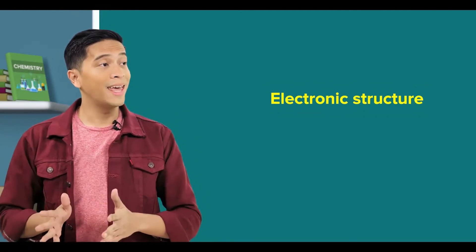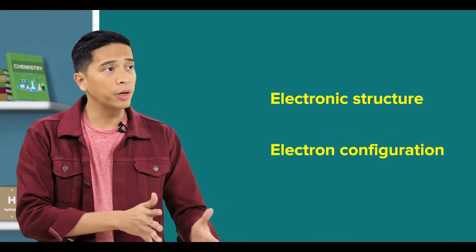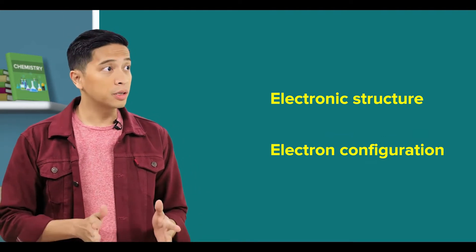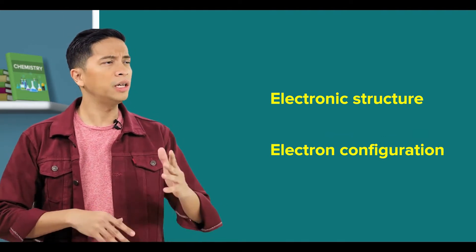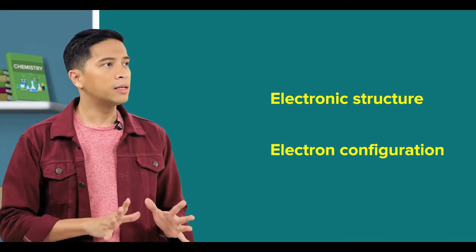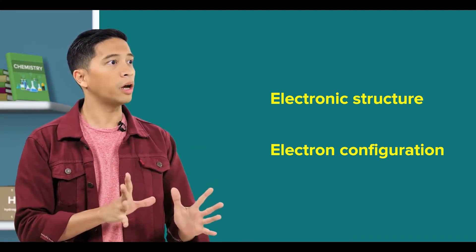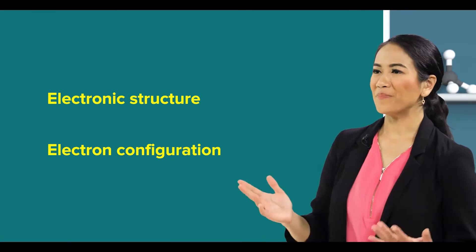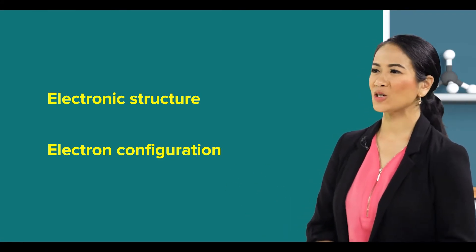And I am so confused between the terms electronic structure and electron configuration. Some authors seem to use them interchangeably, but then they look so different when they are used to describe the same atom. Yep, I had the same confusion as well when I was a student.